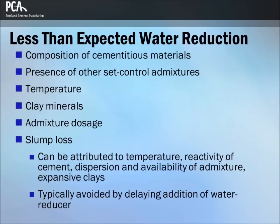Slump loss can often be offset by delaying the time of addition of the admixture. Incompatibility between some high-range water reducers and cementing materials can result in very rapid losses in workability shortly after mixing. While this can often be attributed to the temperature of the concrete, the reactivity of the cement and continuous availability of admixtures to disperse hydrating cement grains is a key factor. Certain minerals found in aggregate sources such as expansive clays have been found to rapidly absorb polycarboxylate type superplasticizers, thus significantly reducing their effectiveness.